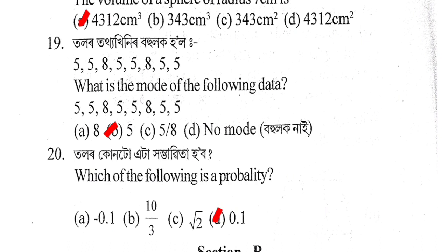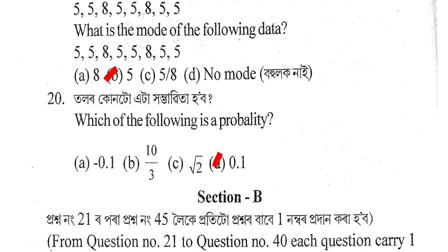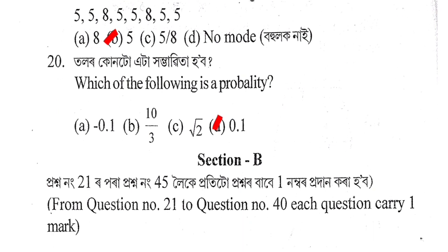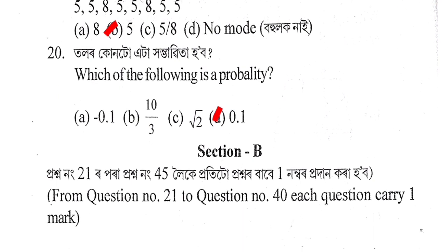Question 19: What is the mode of the following data — 5, 5, 8, 5, 5, 8, 5, 5? The answer is Option B: 5. Question 20: Which of the following is a probability? Option D is the correct answer.